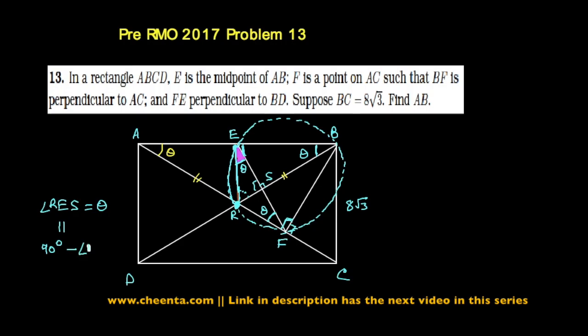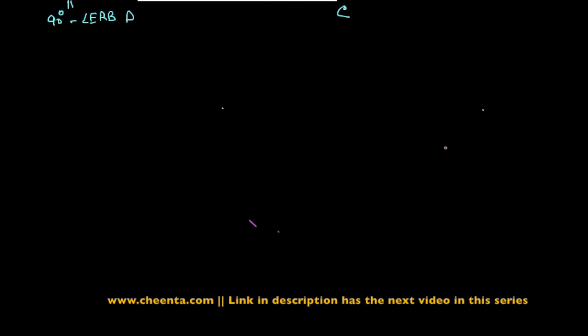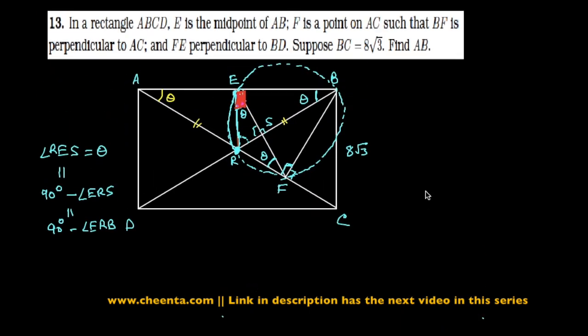Angle RES, which is the same as 90 degrees minus angle ERB. ERS and ERB are the same angle, it's just naming them differently. But notice that this full angle here was 90 degrees. So 90 degrees minus ERB would be equal to theta.